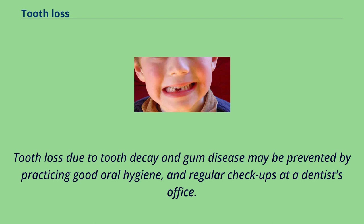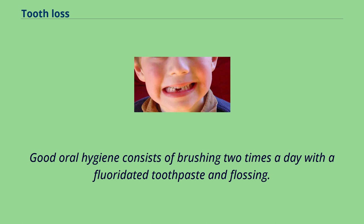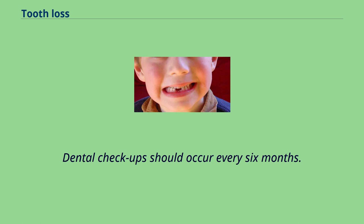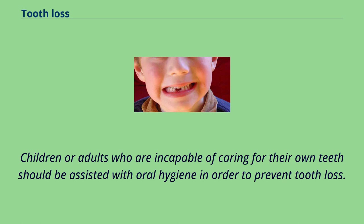Tooth loss due to tooth decay and gum disease may be prevented by practicing good oral hygiene and regular checkups at a dentist's office. Good oral hygiene consists of brushing two times a day with a fluoridated toothpaste and flossing. Dental checkups should occur every six months. Children or adults who are incapable of caring for their own teeth should be assisted with oral hygiene in order to prevent tooth loss.